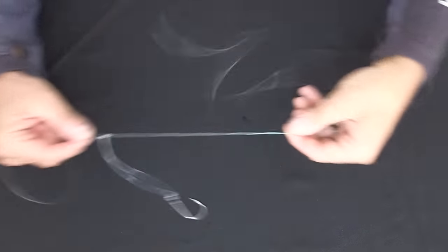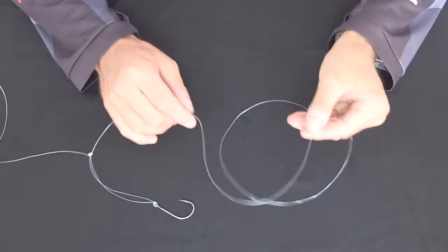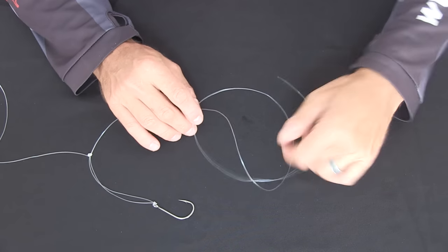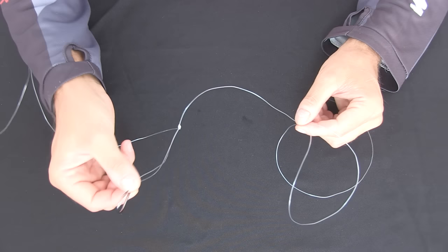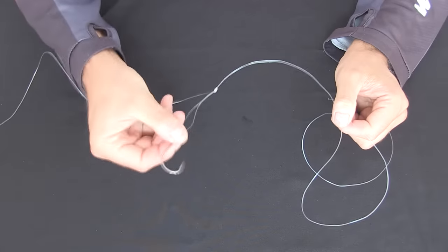You may want to repeat the process further up the line to create a double dropper loop rig. As I mentioned earlier you only want to do that if you're chasing small fish but for big hard fighting fish you only want to run the one hook set.